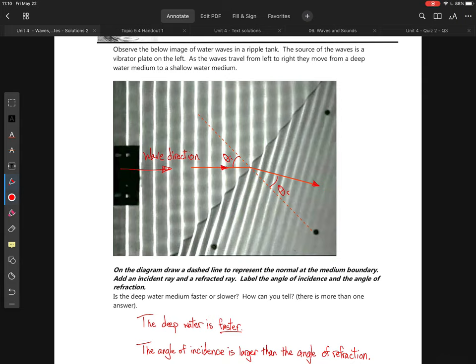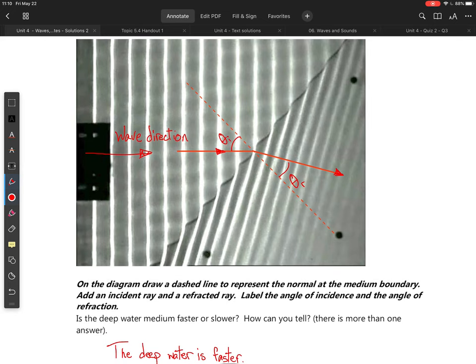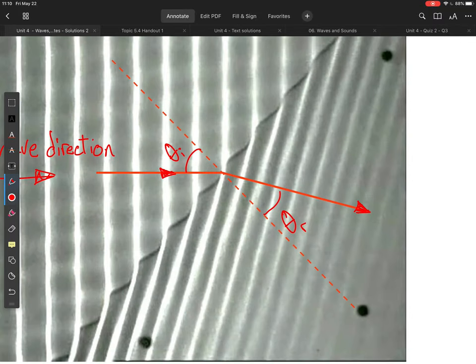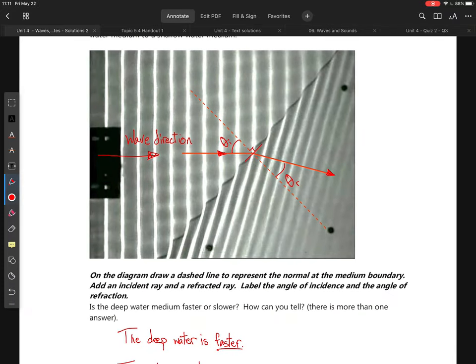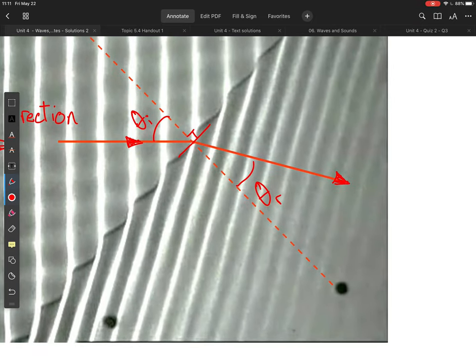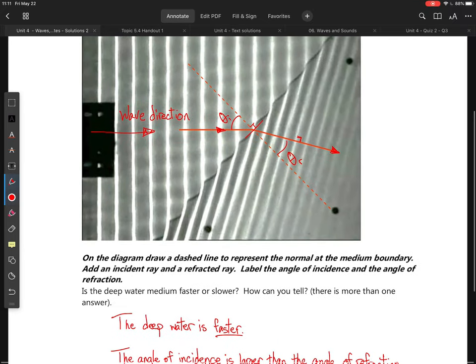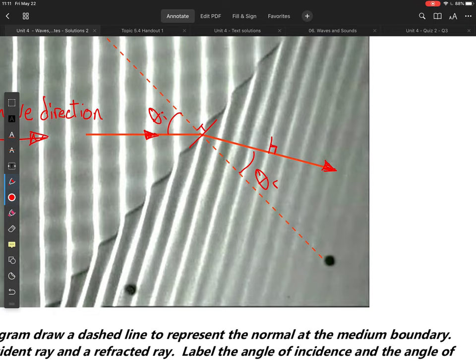So here we have water waves in what is called a ripple tank. So this is just a tank with a wave generator. And we are asked to draw a dash line to represent the normal at the medium boundary. So I've done that. And remember the dash line is just going to be a line perpendicular to the boundary between the mediums. So that's all that is. Once I have that dash line, I can measure my angle of incidence and I can measure my angle of refraction. Note here that our rays are perpendicular to the direction of wave travel. So they're just showing us the direction that our waves are moving in. So perpendicular rays.